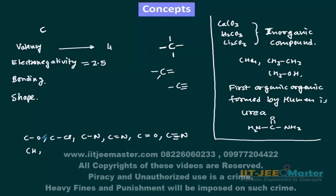Oxygen and chlorine have electronegativities greater than that of carbon, but the difference is not too much. Therefore all the bonds are nearly covalent — and yes, they are polar. So there is no problem in that. If you know the bonding then organic chemistry becomes very easy. Without understanding bonding, organic chemistry is very tough. Most of the bonds are polar but the character is covalent, and this is important.